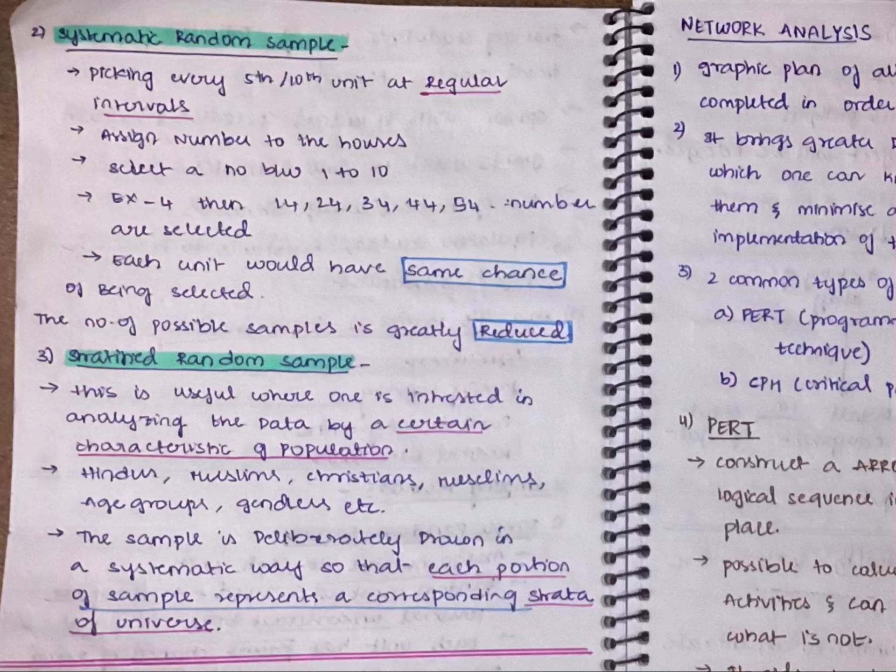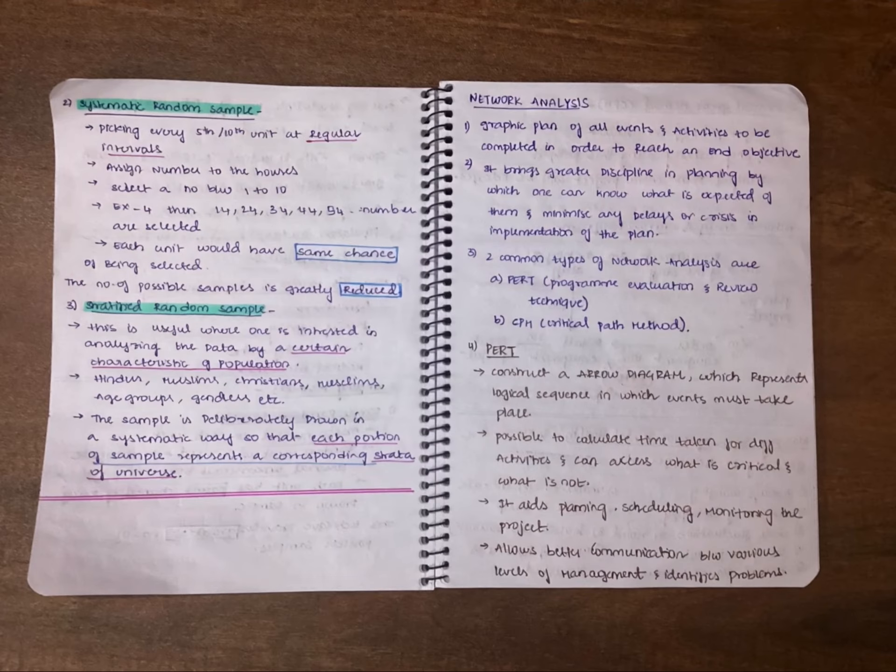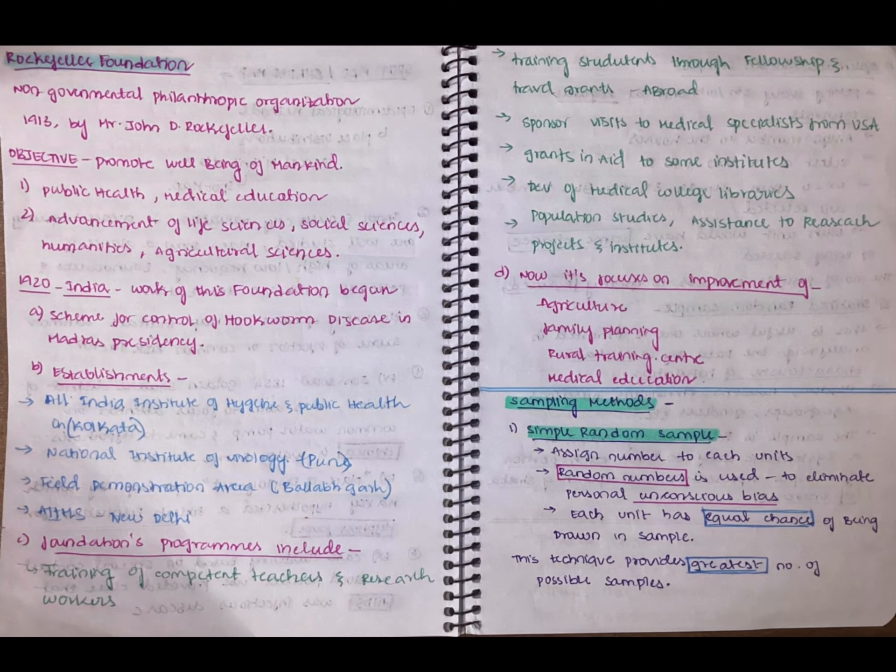Stratified random sample is deliberately drawn in a systematic way so that each portion of the sample represents a corresponding strata of universe. For example, you want to do a study in Hindu and Muslims, so you will take 10 from the Hindus and 10 from the Muslims and perform a study. This point is important: each portion of the sample represents a corresponding strata of universe. This is about sampling methods.